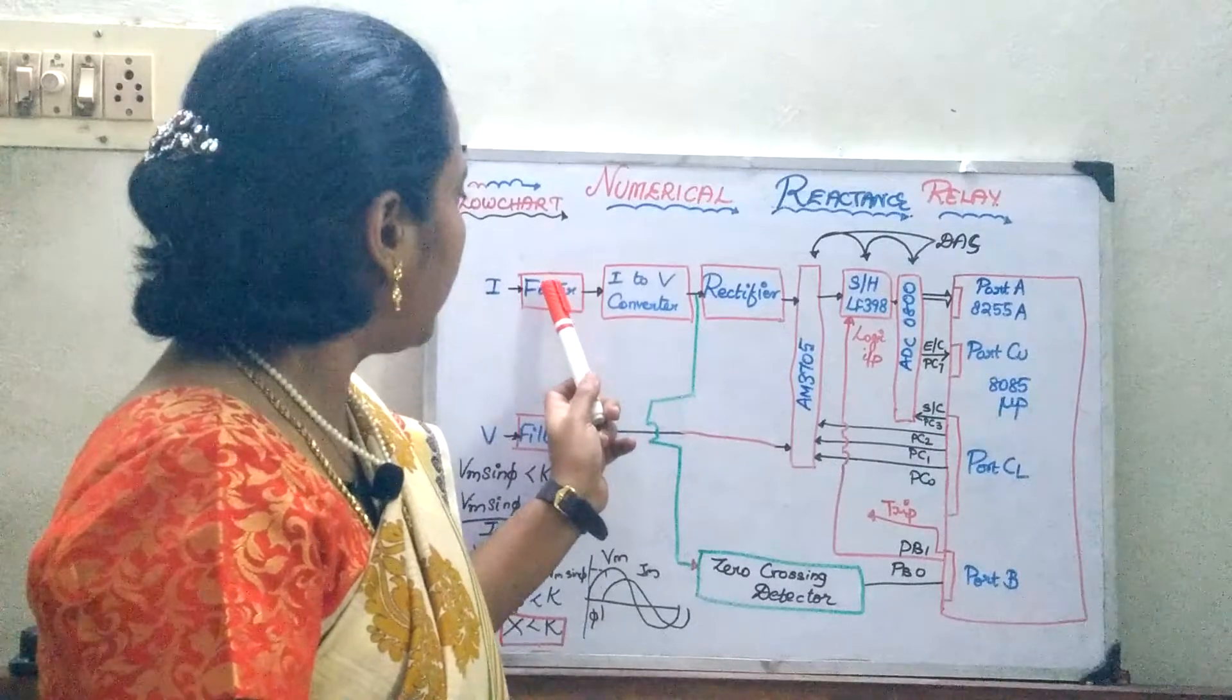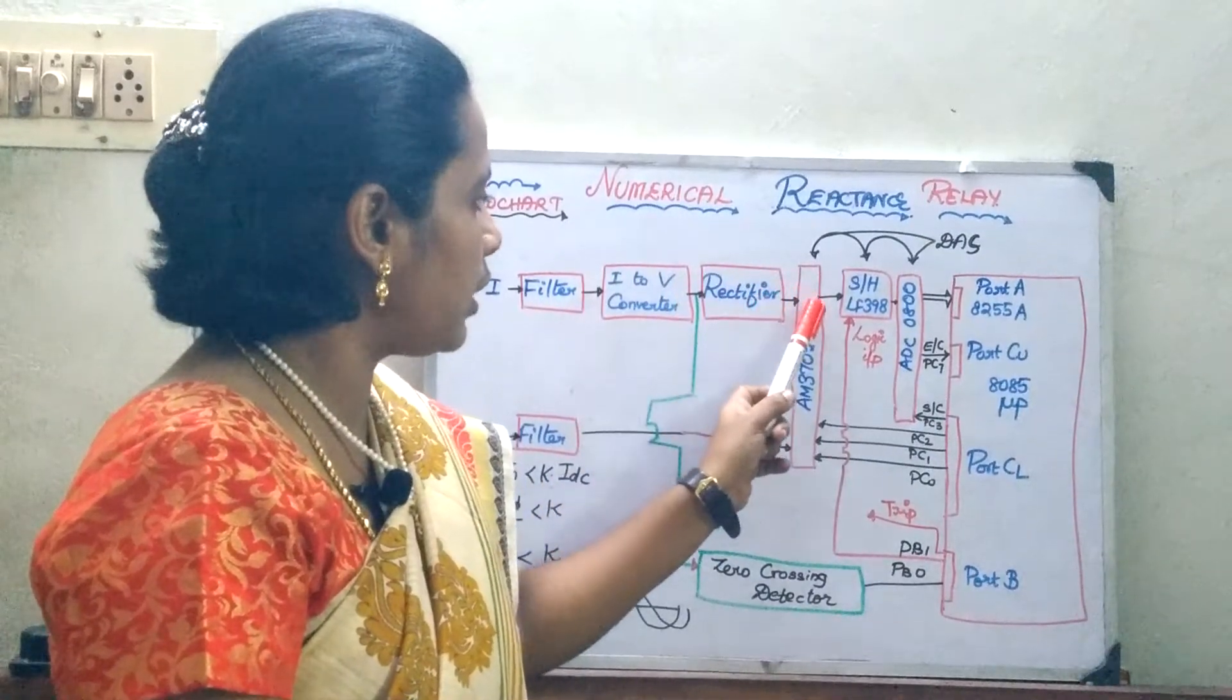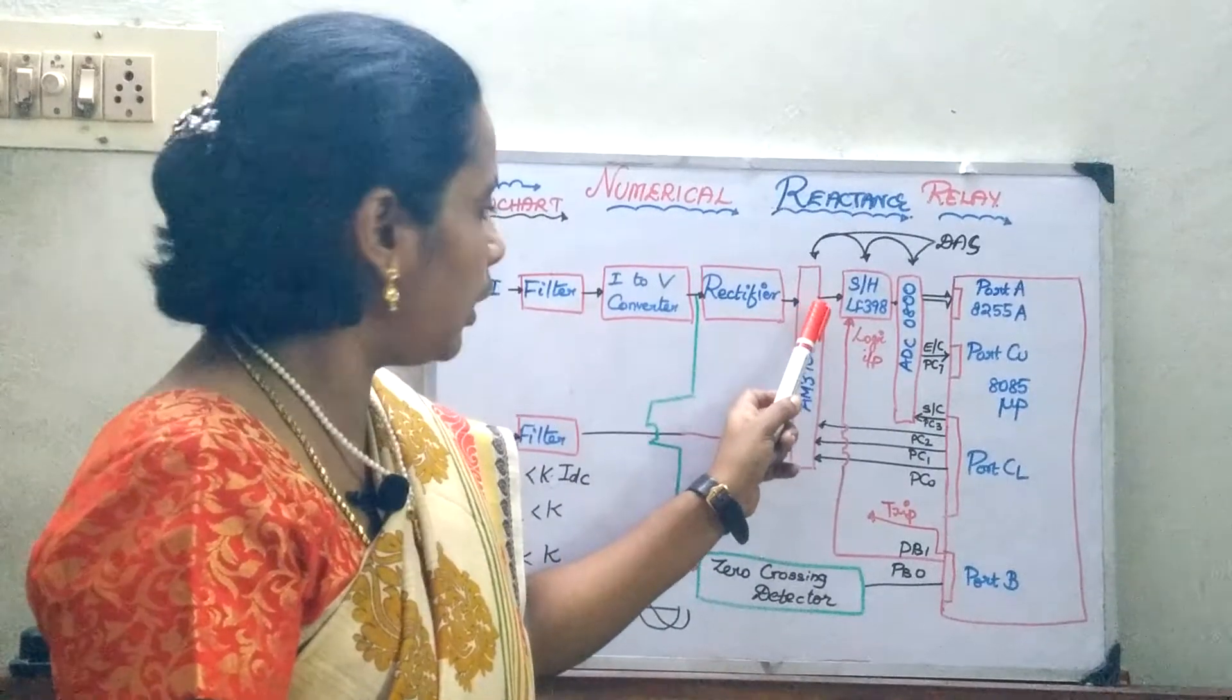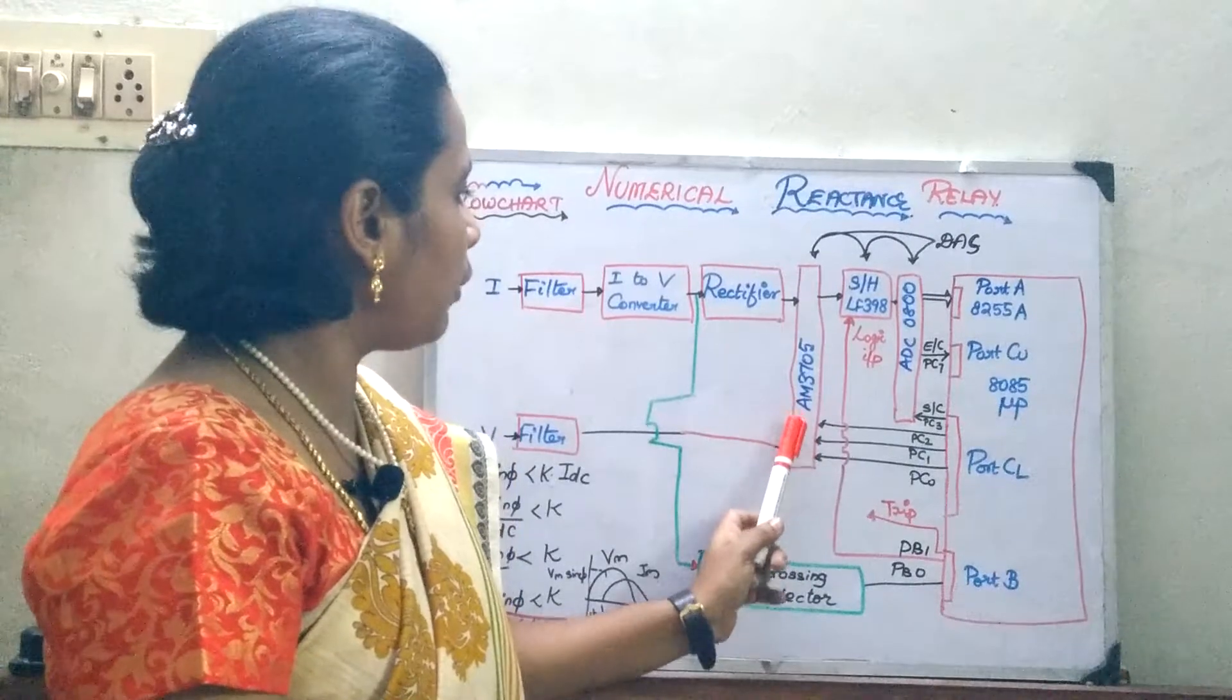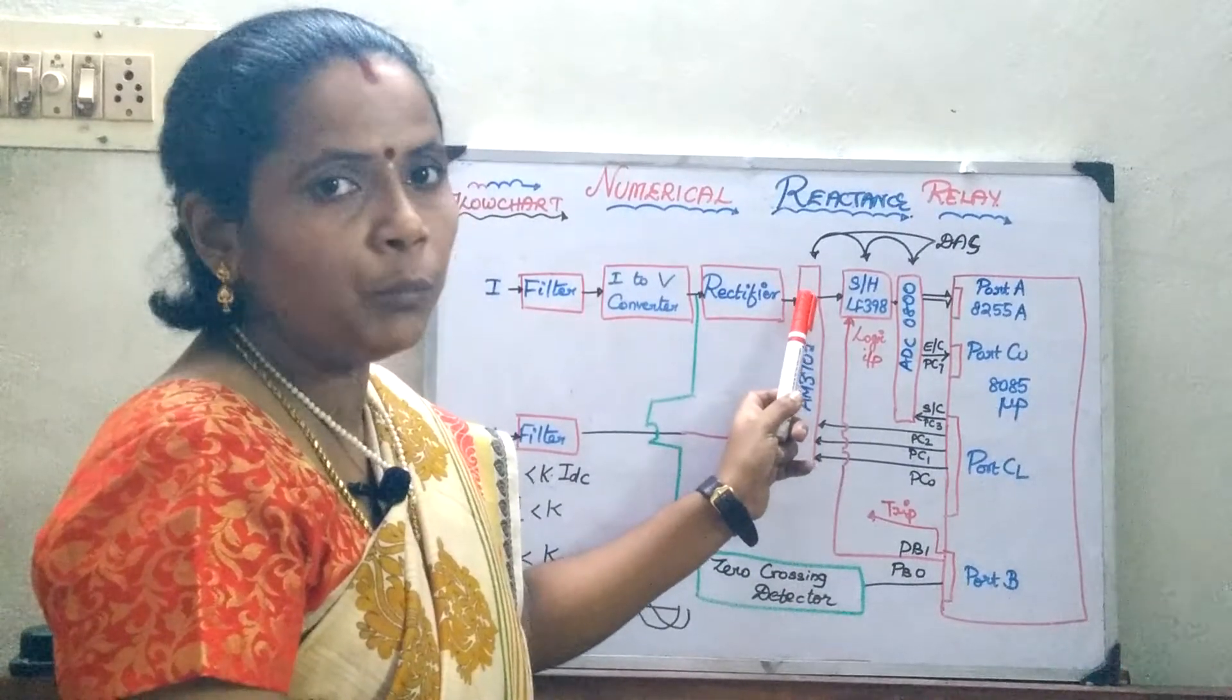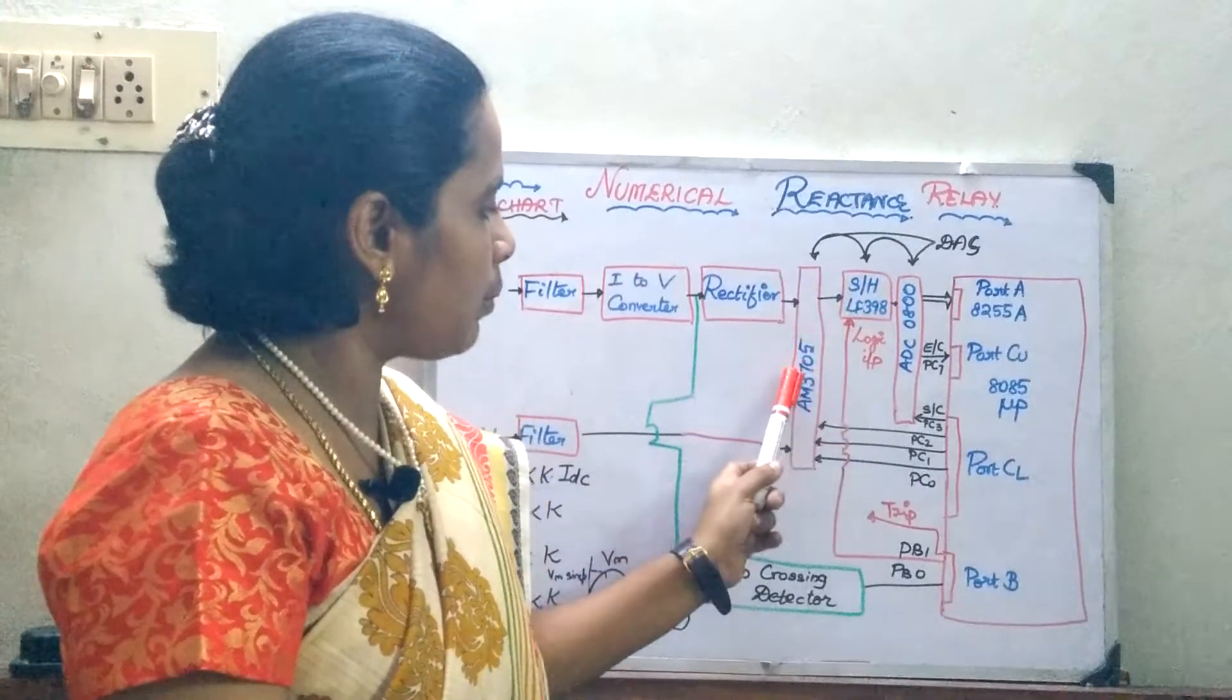You are going to have the current which is going to be converted to the proportional voltage and it is going to be given to the rectifier circuit and you will obtain the value here. The next one is your voltage value is obtained here. You have the voltage and the current value which then is moved on to your sampled and hold circuit.